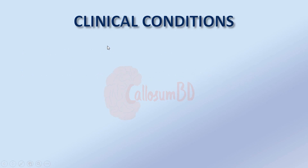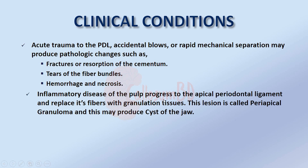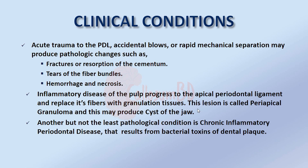Clinical conditions of the periodontal ligament: acute trauma such as accidental blows or rapid mechanical separation may produce pathologic changes including fractures or resorption of the cementum, tears of the fiber bundles, hemorrhage, and necrosis. Inflammatory disease of the pulp can progress to the apical periodontal ligament and replace its fibers with granulation tissue, forming a periapical granuloma which may produce cysts of the jaw. Another pathological condition is chronic inflammatory periodontal disease resulting from bacterial toxins of dental plaque.